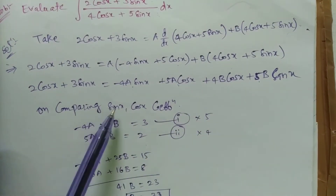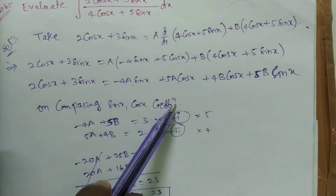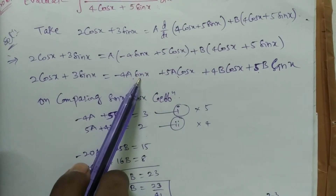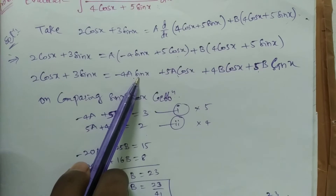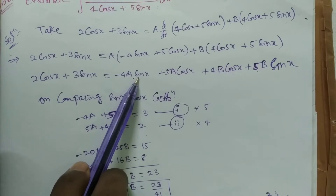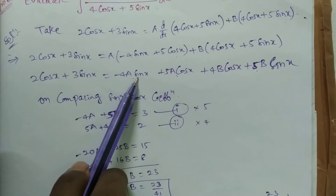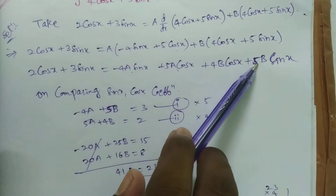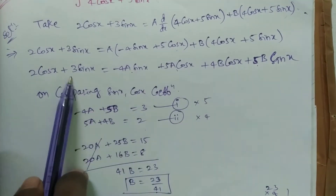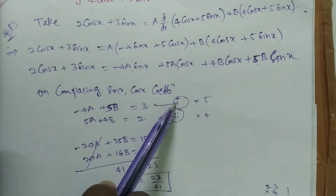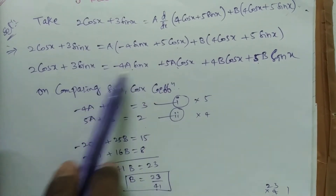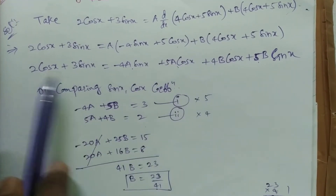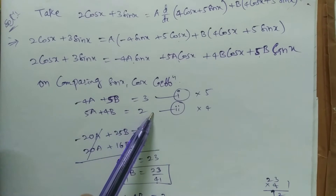Now comparing coefficients of sin x and cos x on both sides. For sin x: -4A + 5B = 3, this is equation (1). For cos x: 5A + 4B = 2, this is equation (2).